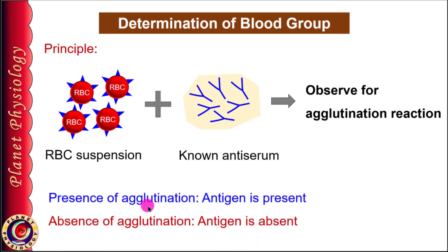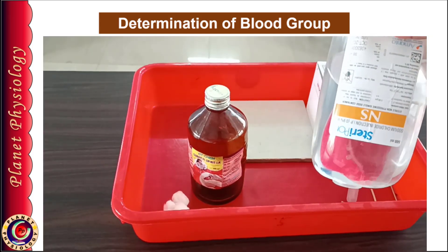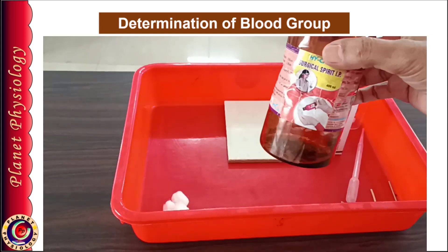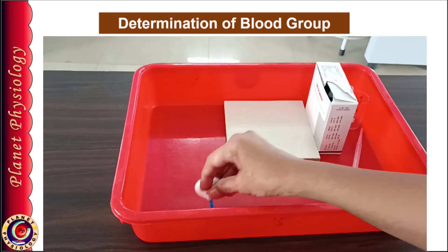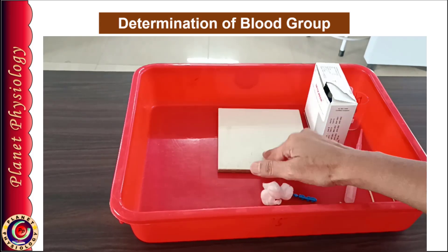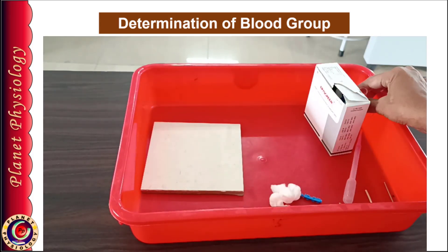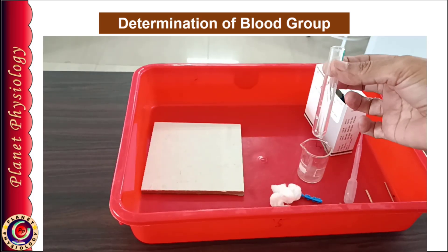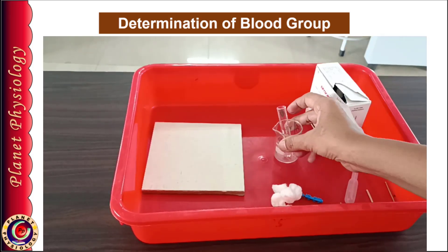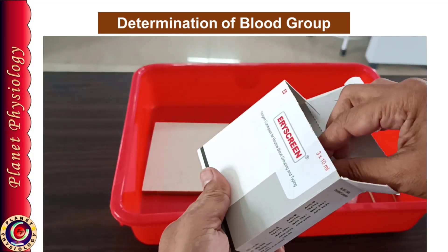For this procedure we require normal saline or citrated saline, spirit, cotton, lancet, a white tile, a small test tube, and an anti-serum kit containing anti-A, anti-B, and anti-D.